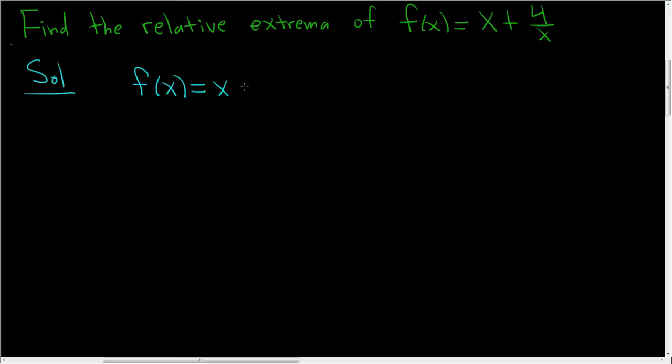Well, x is fine. We can take the derivative of that. Plus, when you look at this, you really don't want to use the quotient rule. Instead, just bring the x upstairs so you get 4x to the negative 1.